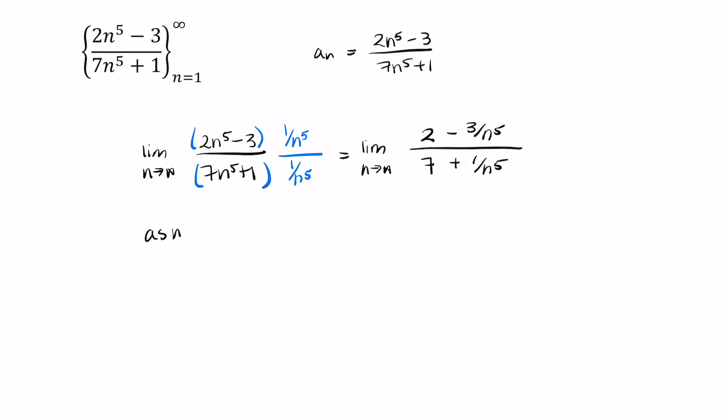Well as n approaches infinity, both 1 over n to the fifth and negative 3 over n to the fifth approach 0. In fact, this one follows from this one since as n approaches infinity, this is just 0 times negative 3. So of course it's going to be 0.